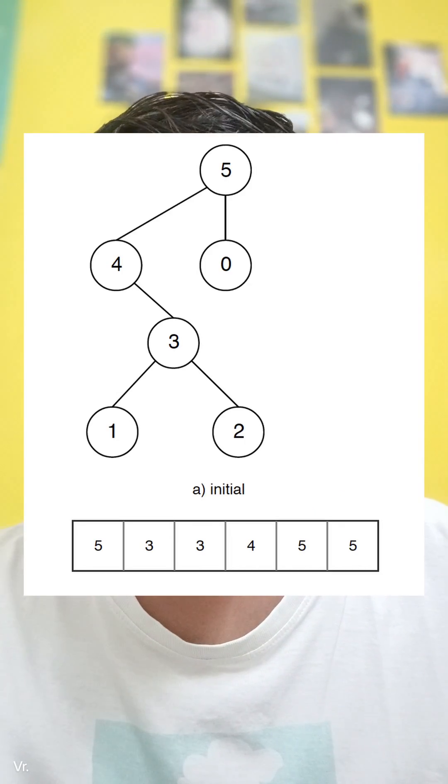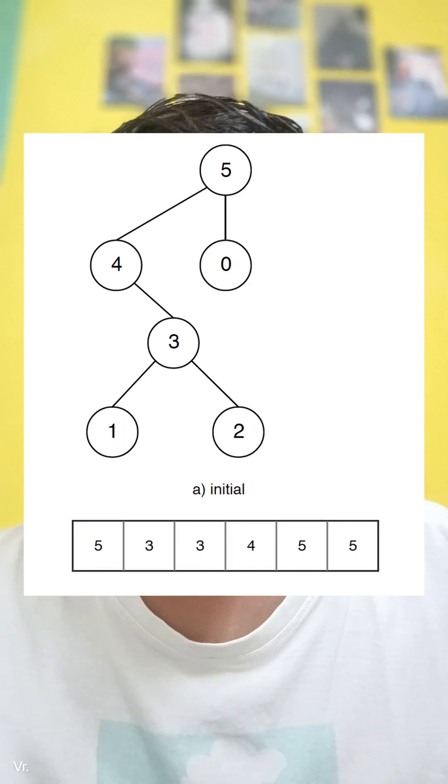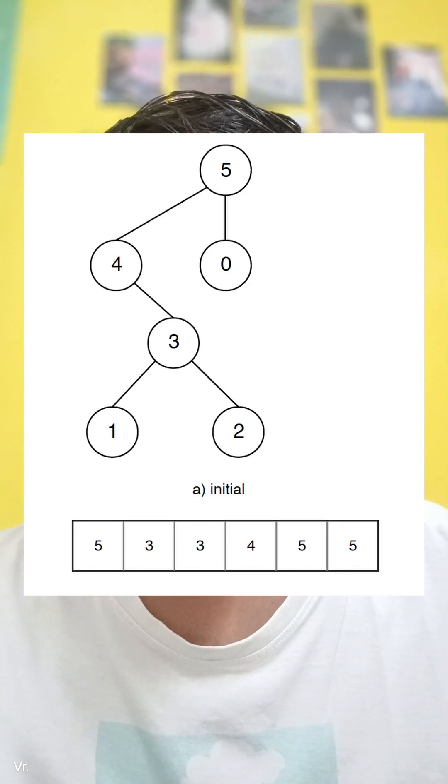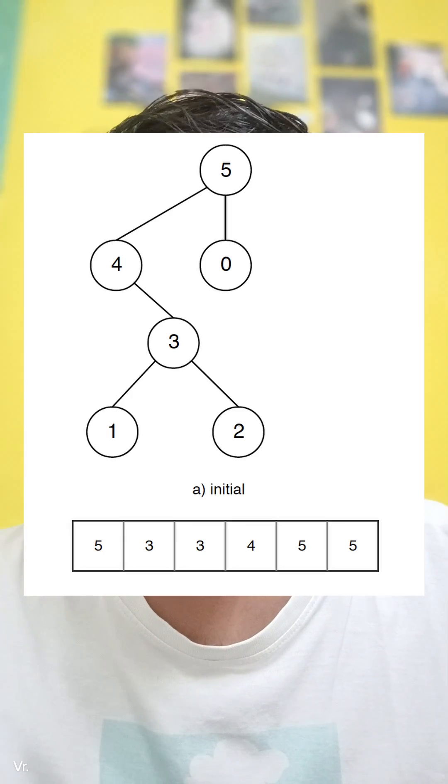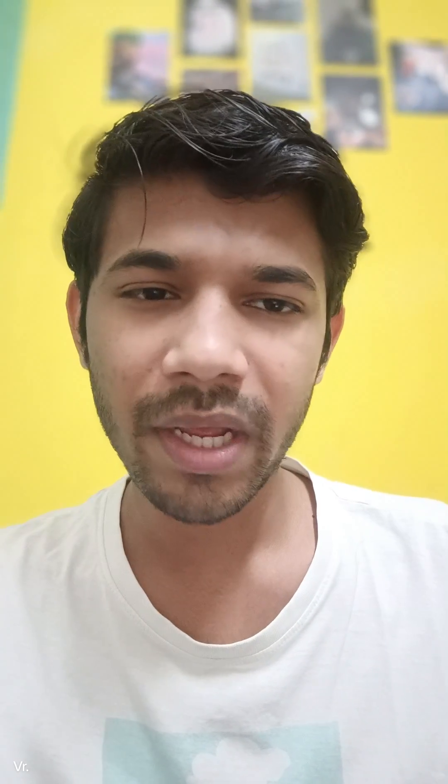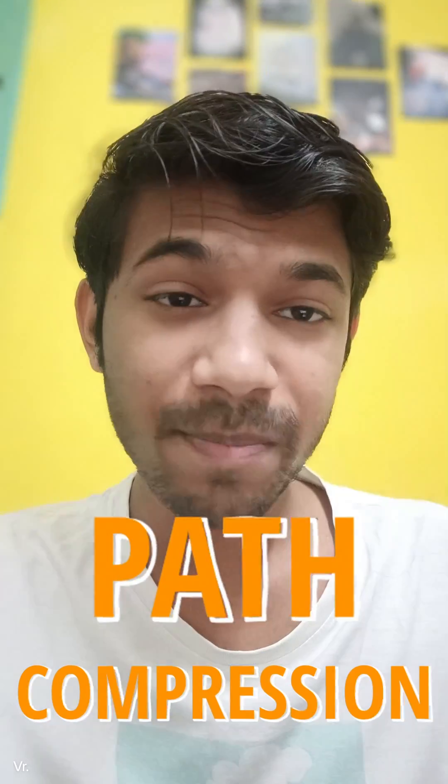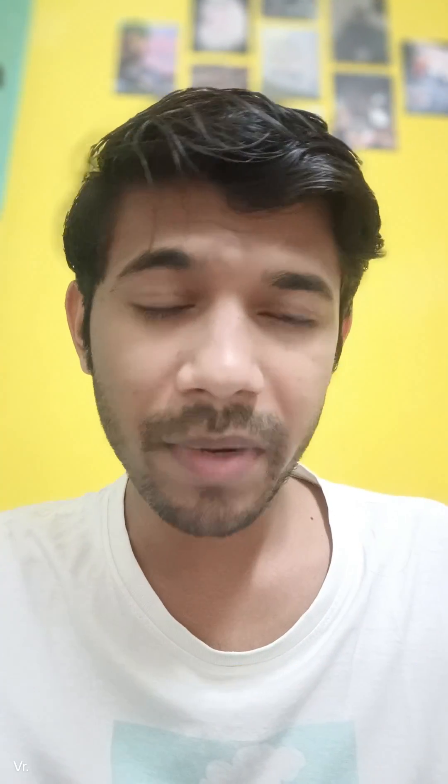This data structure keeps track of elements split into different groups and lets you quickly check if two elements are in the same group. And how does it achieve that? It is because of the optimization technique path compression, and this path compression optimization technique is applied during the find operation.